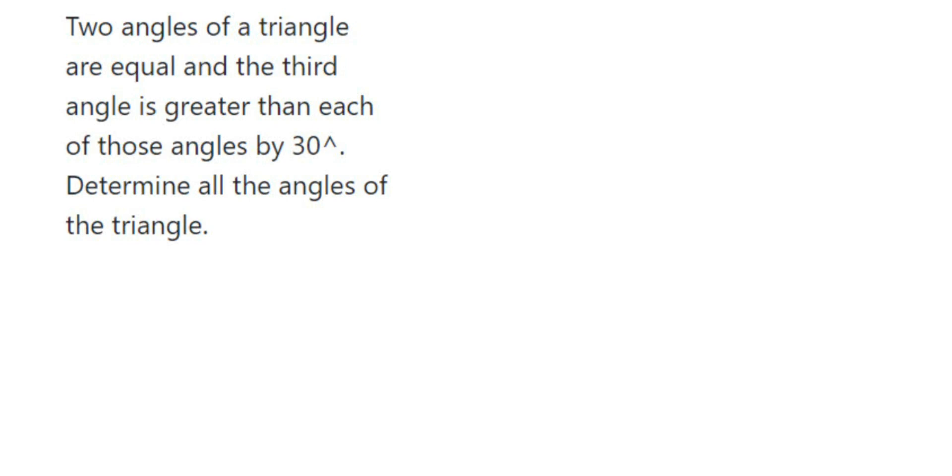Hello everyone, here is a question on triangles. Two angles of a triangle are equal and the third angle is greater than each of those angles by 30 degrees. Determine all the angles of the triangle. What they have given: two angles are equal, and the third angle is 30 degrees greater than the other two.